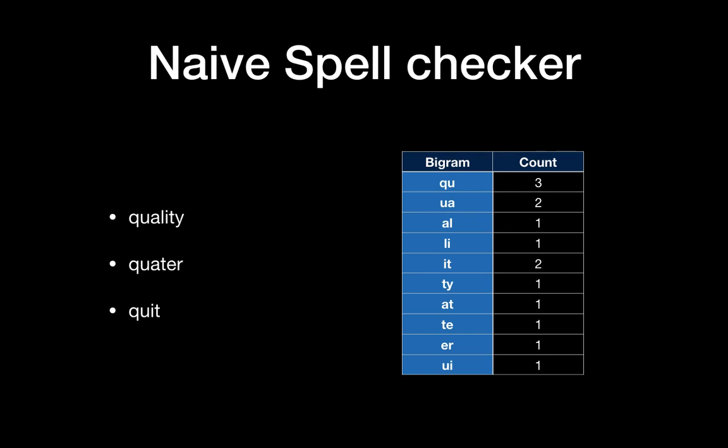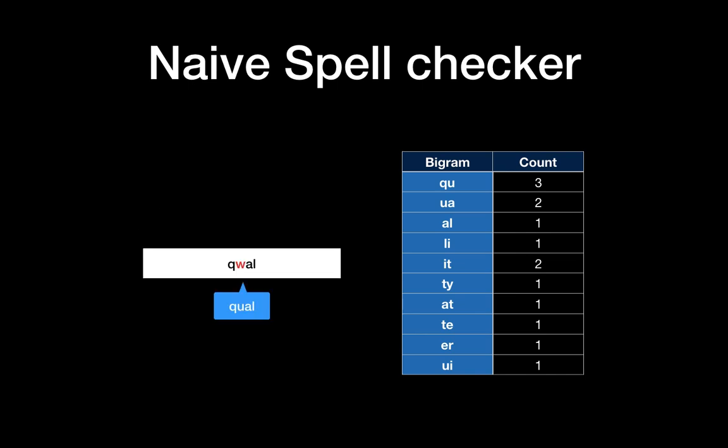Well, let's talk about the naive spell checker as well. Here I have an example of character level bigrams. The data was 'quality,' 'quarter,' and 'quit.' And the user typed 'qwal.' You can check the spelling here.